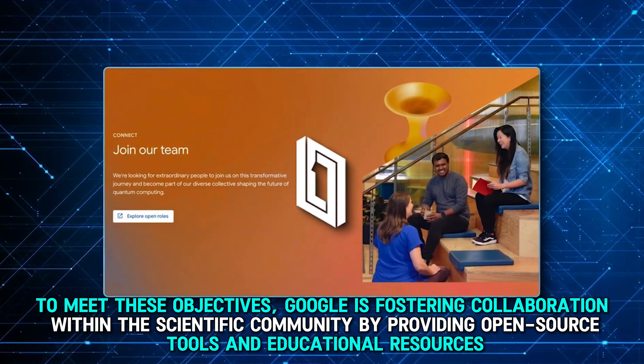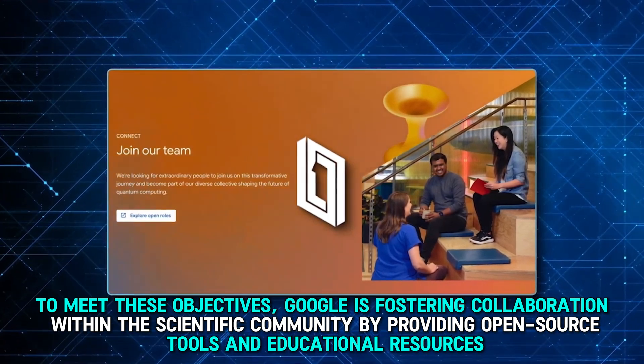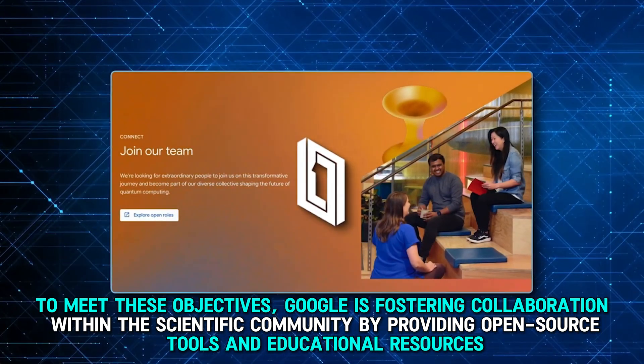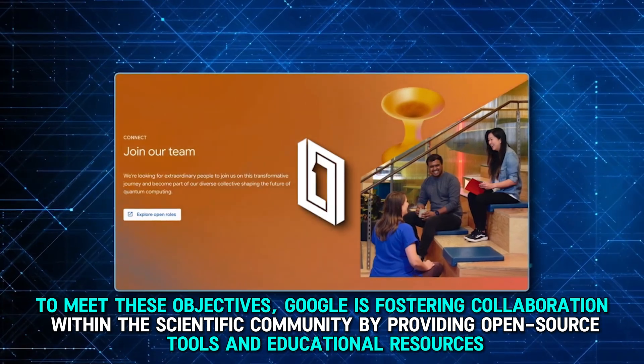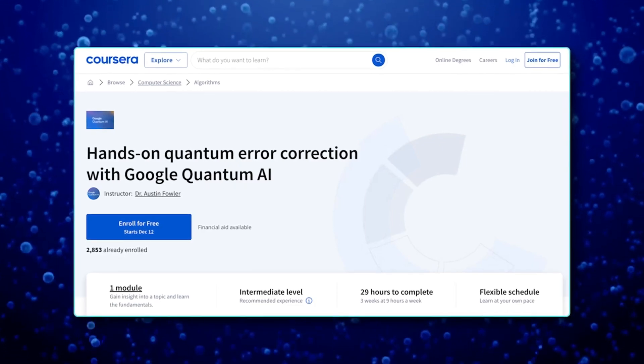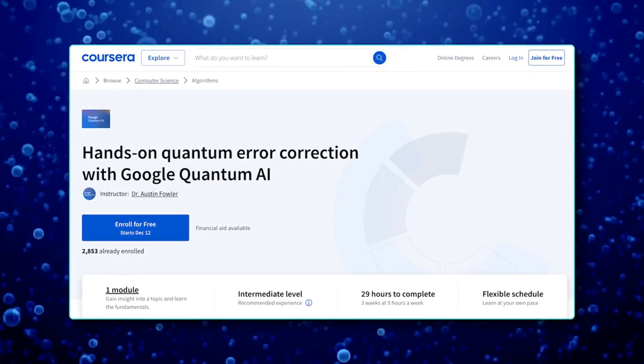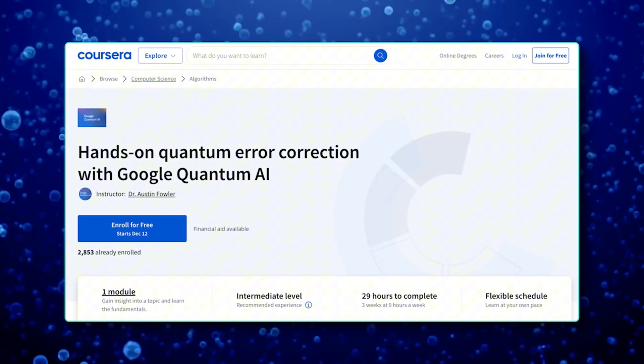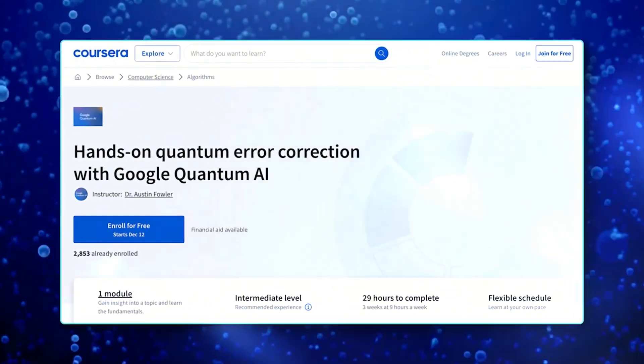To meet these objectives, Google is fostering collaboration within the scientific community by providing open-source tools and educational resources. One such initiative is a new course on quantum error correction available on Coursera, designed to empower more researchers and developers to contribute to the field.